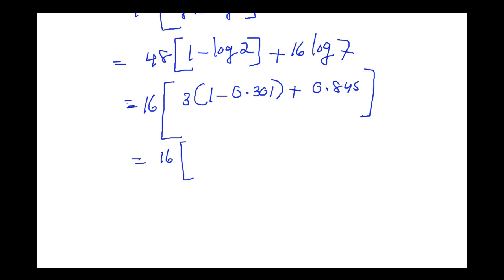Now this equals 16 into 3 into 1 minus 0.301. You have 0.699 plus 0.845. So this becomes you get 2.942 into 16.